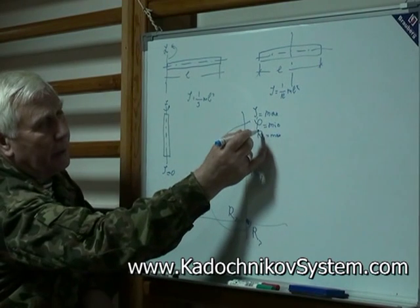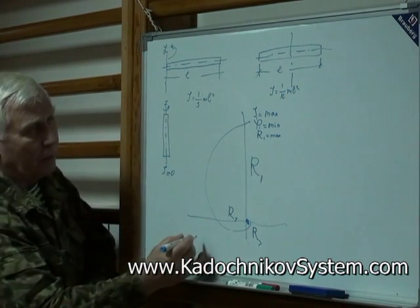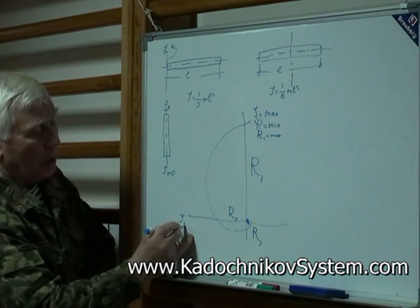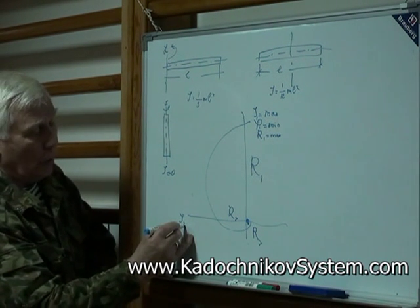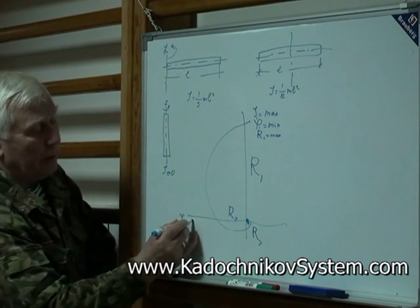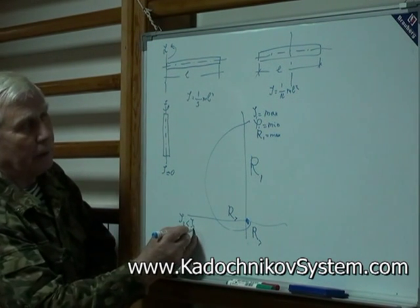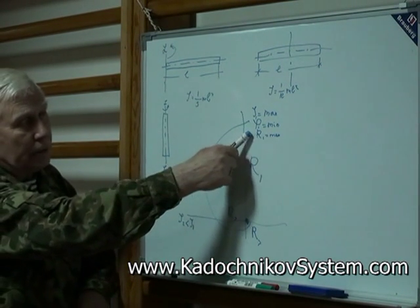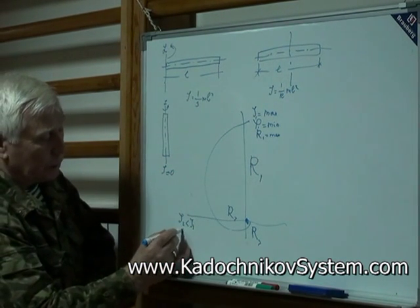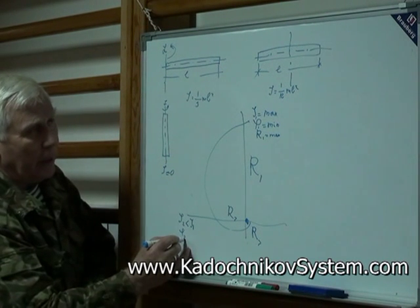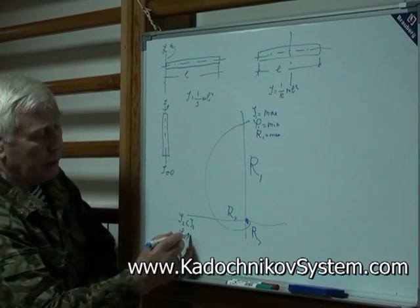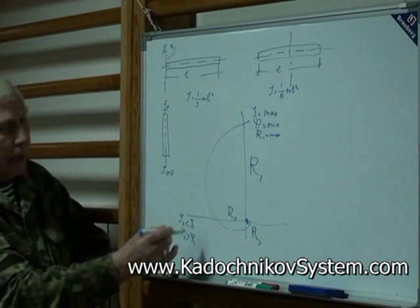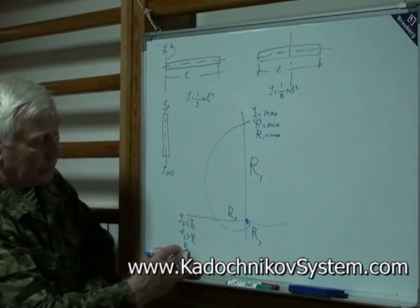What can we say about this radius? Let it be the first. This one is the second. The second moment of inertia is lower than the first one. What about velocity? The second velocity will be higher than the first. The second radius is smaller than the first one.